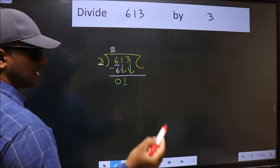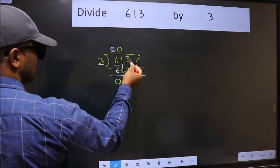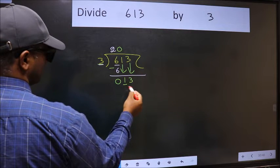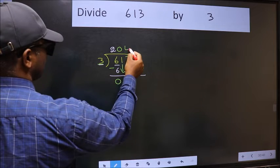And the rule to bring down the second number is we should put 0 here. Then only we can bring this number down. Now 13. A number close to 13 in the 3 table is 3 times 4 is 12.